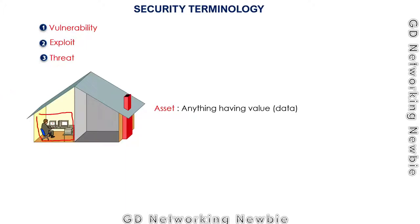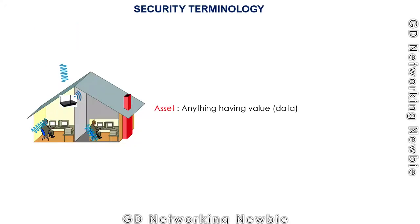Some users are on one side of the building with computers connected by cable. Now suppose we extend the organization and there are other users on the other side of the wall who also want to access the data. To provide them access, we introduce a wireless access point, which radiates Wi-Fi signals using electromagnetic waves or radio frequency signals. This data is being sent to those users but is also being radiated out of the organization.